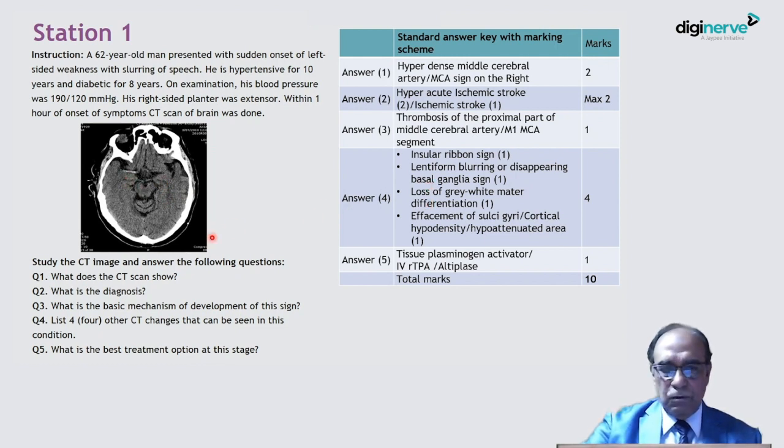And loss of gray matter white matter differentiation. There is loss of gray matter differentiation. And effacement of sulci gyri. Or you can write cortical hypodensity. Or you can write hypoattenuated area. This means all the same. So you can see there is effacement of the sulci gyri or there is cortical hypodensity.